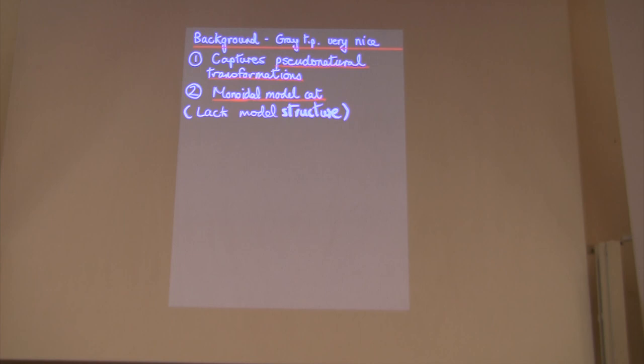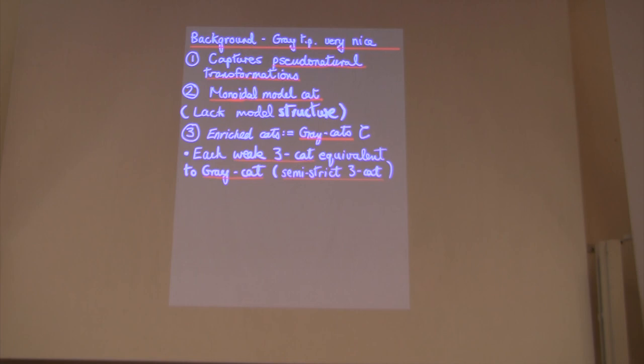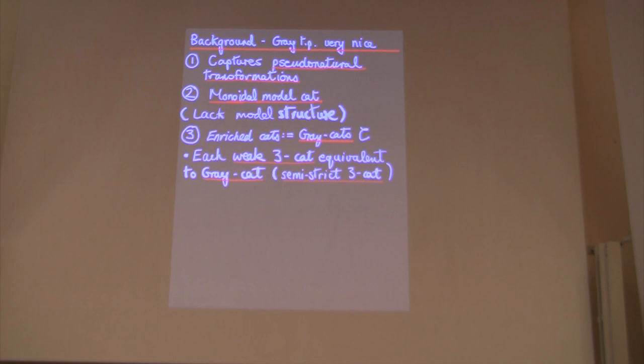What are its nice properties? First of all, we just mentioned it captures pseudo-natural transformations. That's probably, for me, property number one, the most important. It's also homotopically what's called the monoidal model structure, with respect to the natural model structure on 2CAT. Homotopically, that shows this is something very nice. The third thing is that the enriched categories in the Gray tensor product are called Gray categories, and these really do capture all weak three categories up to equivalence. On the other hand, they're also very strict. People sometimes call them semi-strict three categories. They're in between strict ones and weak ones, sort of towards the stricter side, and so you can work with them quite well.